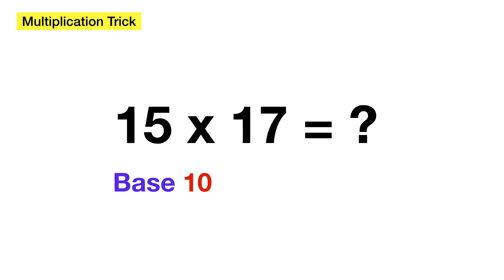So in this case, we have 15, which is 5 above 10, so it's 5. And 17, which is 7 above 10, so we write 7.